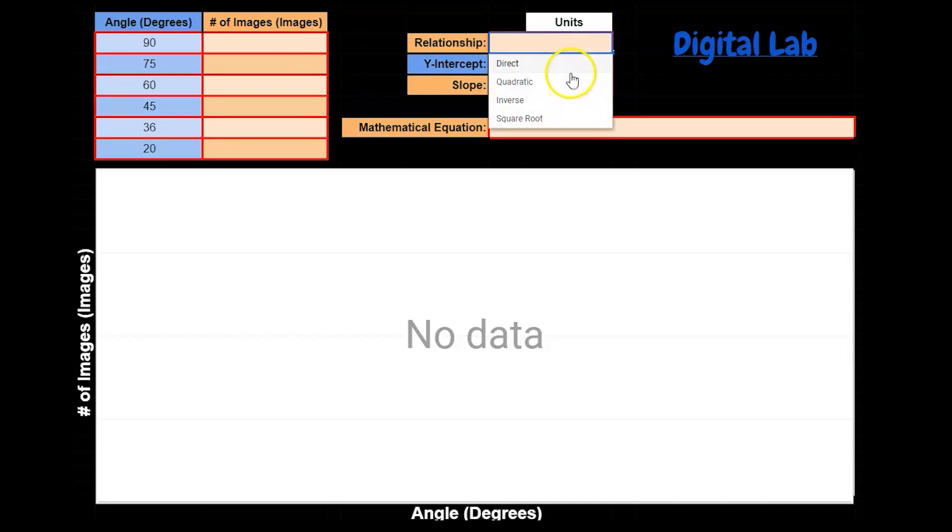Select the relationship from the drop-down menu to linearize the graph. A slope and y-intercept will pop up after you've linearized the relationship. You need to use the information plotted on the graph to identify the y-intercept and slope's units.